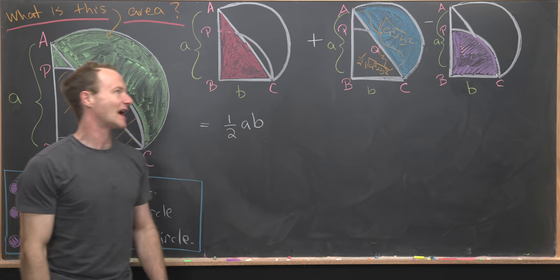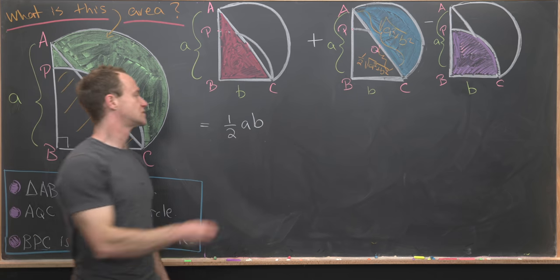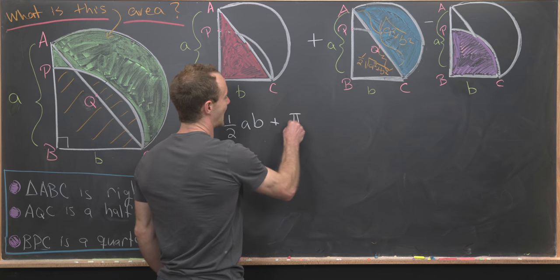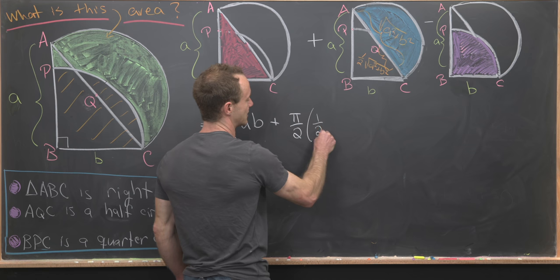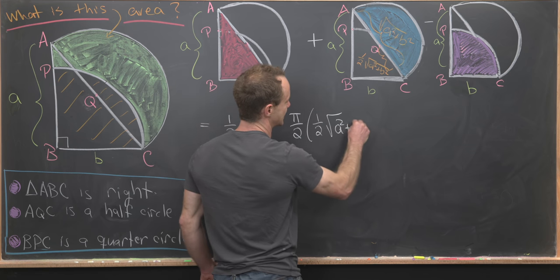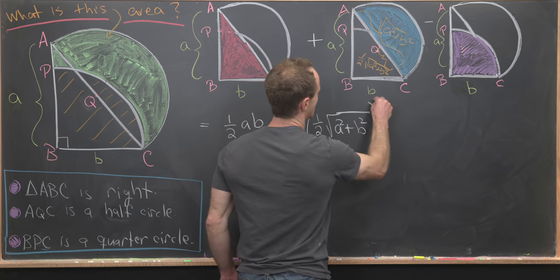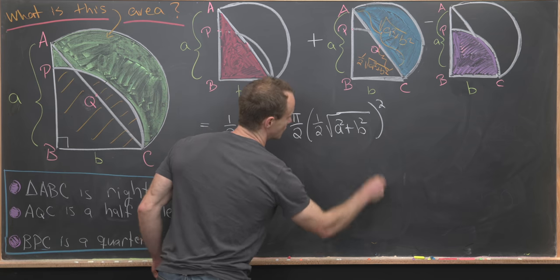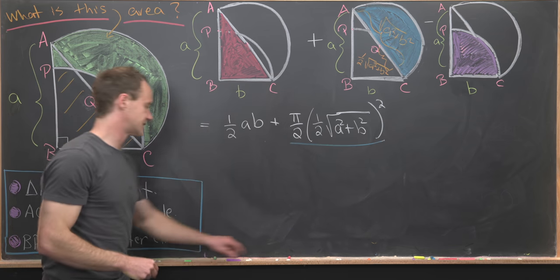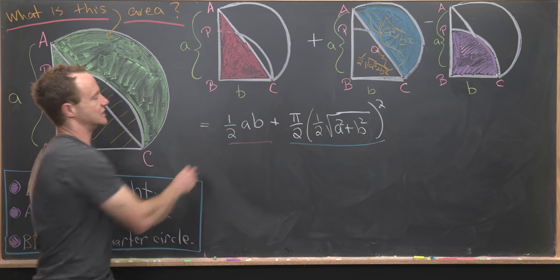We know we're taking the area of half of a circle, so the area we'll need will be pi over two times the radius squared. That'll be one half square root of a squared plus b squared quantity squared. So that gives us the area of this blue region.